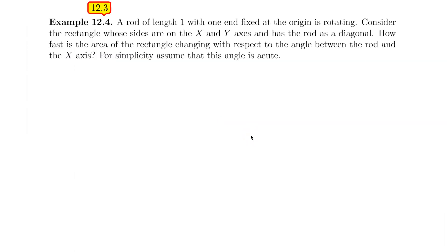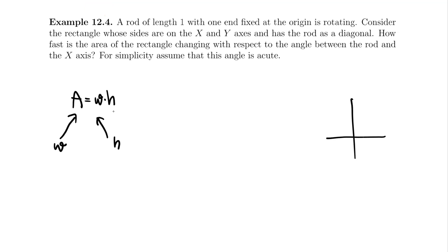The area of the rectangle is the width times the height. So far there's no angle theta in here — the area depends on the width and height. But as the rod rotates, the width and height of the rectangle depend on the angle theta.